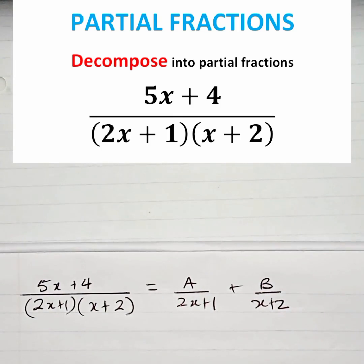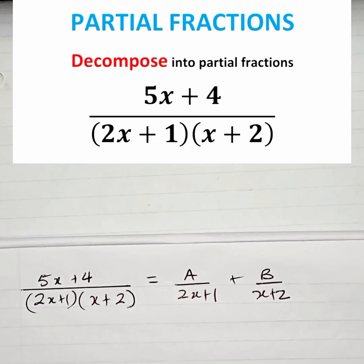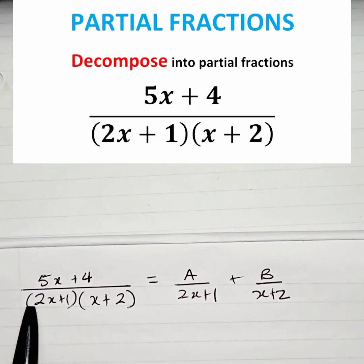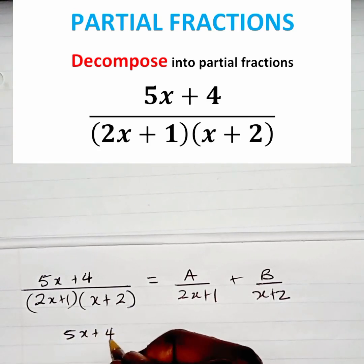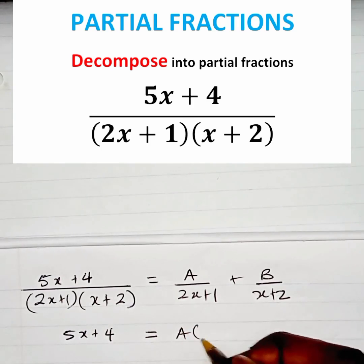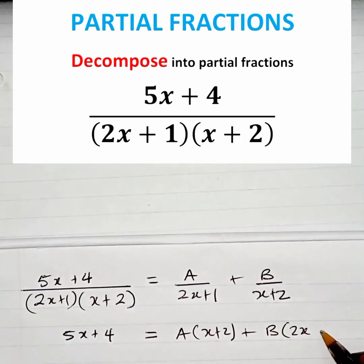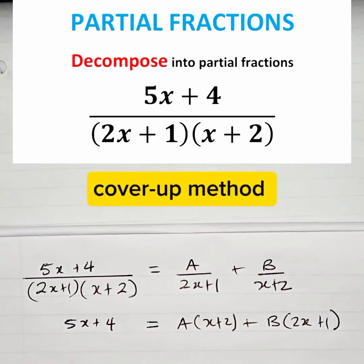To solve that equation, we need to multiply throughout the equation by the lowest common denominator. The lowest common denominator in this case is (2x + 1)(x + 2). So if we apply that on the left-hand side, we are going to have 5x + 4 is equal to A(x + 2) plus B(2x + 1). That is if we apply everything by the lowest common denominator.